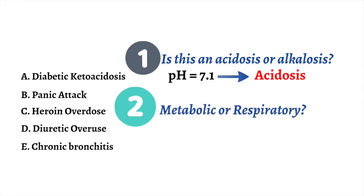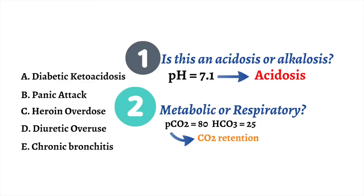Now that we know she is acidotic, we need to figure out if this is a respiratory acidosis or a metabolic acidosis — essentially, is this process being driven by the lungs, or is it a process within the body? To figure this out, we look at the PCO2 and the bicarbonate level. If the PCO2 is elevated in an acidosis, then this means it is a respiratory acidosis, as hypoventilation is causing carbon dioxide to build up in the blood, turning it acidotic. On the other hand, if the PCO2 is low in the setting of an acidosis, then look at the bicarbonate level — if it is low as well, this indicates a metabolic disorder, and the lungs have compensated by hyperventilating and blowing off CO2. In this case, our patient has a high PCO2 of 80, a pH of 7.1, and a normal bicarbonate, indicating a respiratory acidosis.